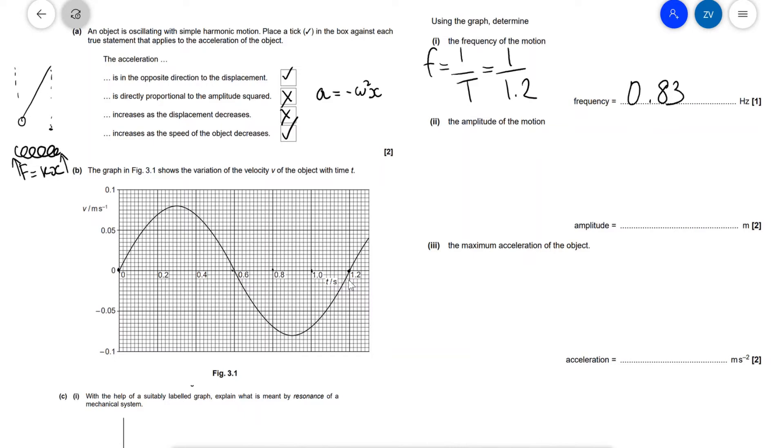Okay, well how do we work out the amplitude of the motion? Now the most common mistake is to just find the amplitude from here and just write this one down which is about 0.08. Now this is, I'm afraid, very incorrect because this is not the amplitude; this is the maximum speed.